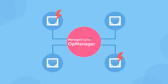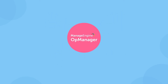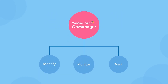This is where ManageEngine OpManager comes into play — brilliant, comprehensive Ethernet monitoring software that monitors multiple critical parameters and resolves issues that could cause downtime. OpManager helps you identify, monitor, and track Ethernet interfaces.